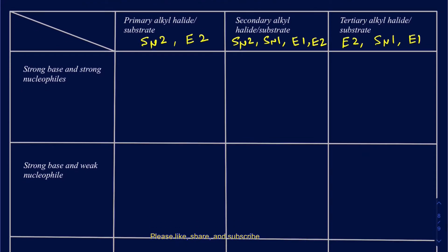If you have a strong base that's also going to be a strong nucleophile — remember some of the strong bases are also going to be acting as your strong nucleophiles. One big example is going to be any of your hydroxides. You can have any of your methoxides, and then ethoxide (OCH₂CH₃). You can also talk about acetylides, or those coming from alkynes. Those are your most common strong bases that are also going to be strong nucleophiles. And importantly, these are all actually going to be small bases — they are not really bulky.